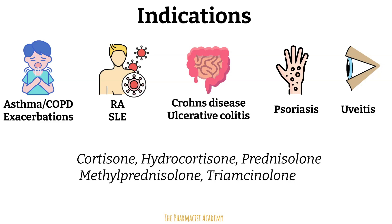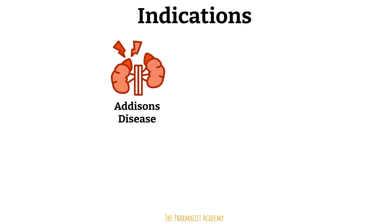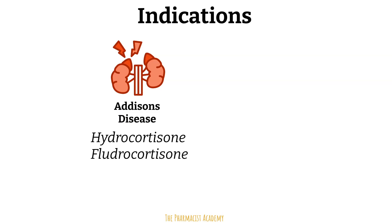Agents like cortisone, hydrocortisone, methylprednisolone, prednisolone, and triamcinolone are utilized. The choice between them may depend on onset of action, duration of action, and formulation. For adrenal insufficiency, Addison's disease, or congenital adrenal hyperplasia — where the adrenal gland fails to produce cortisol and sometimes aldosterone — drugs like hydrocortisone and fludrocortisone provide both glucocorticoid and mineralocorticoid effects essential for replacing cortisol and aldosterone.